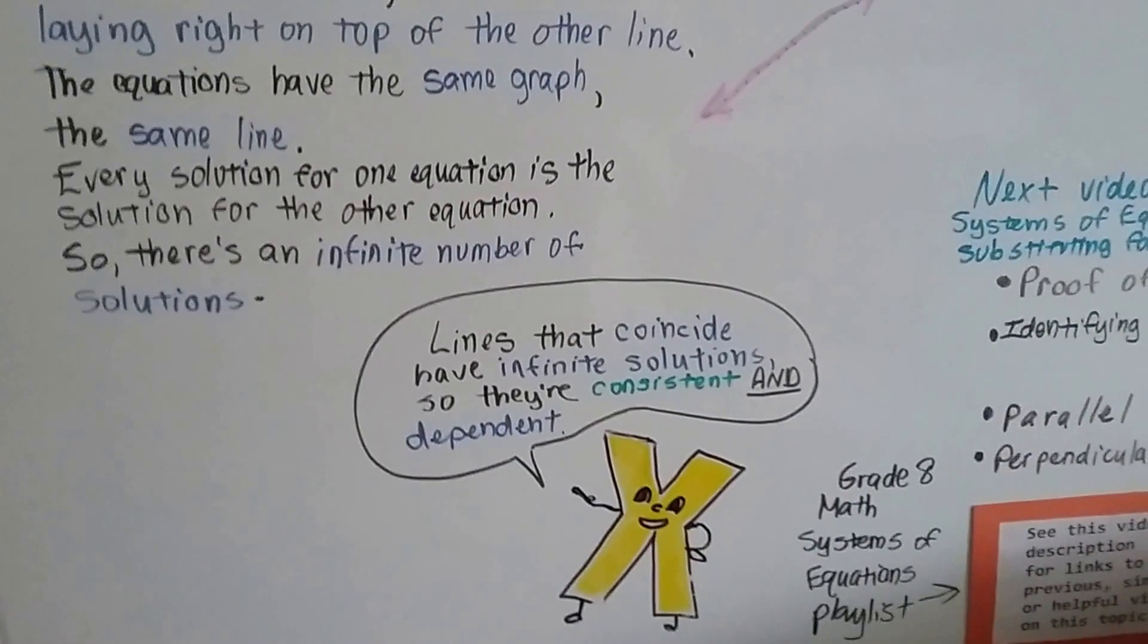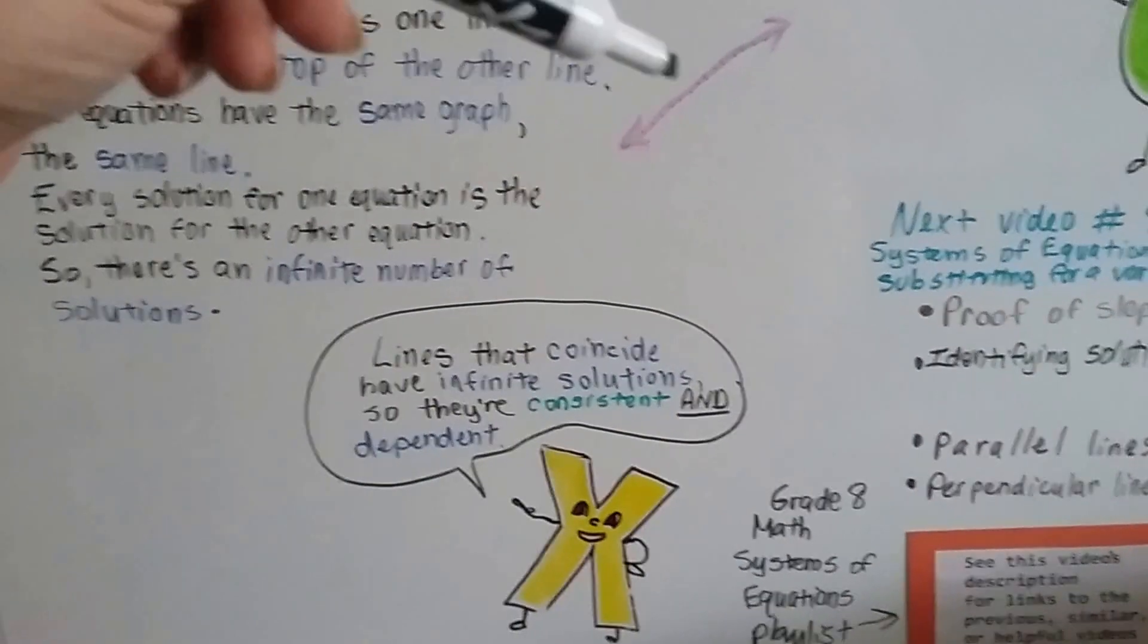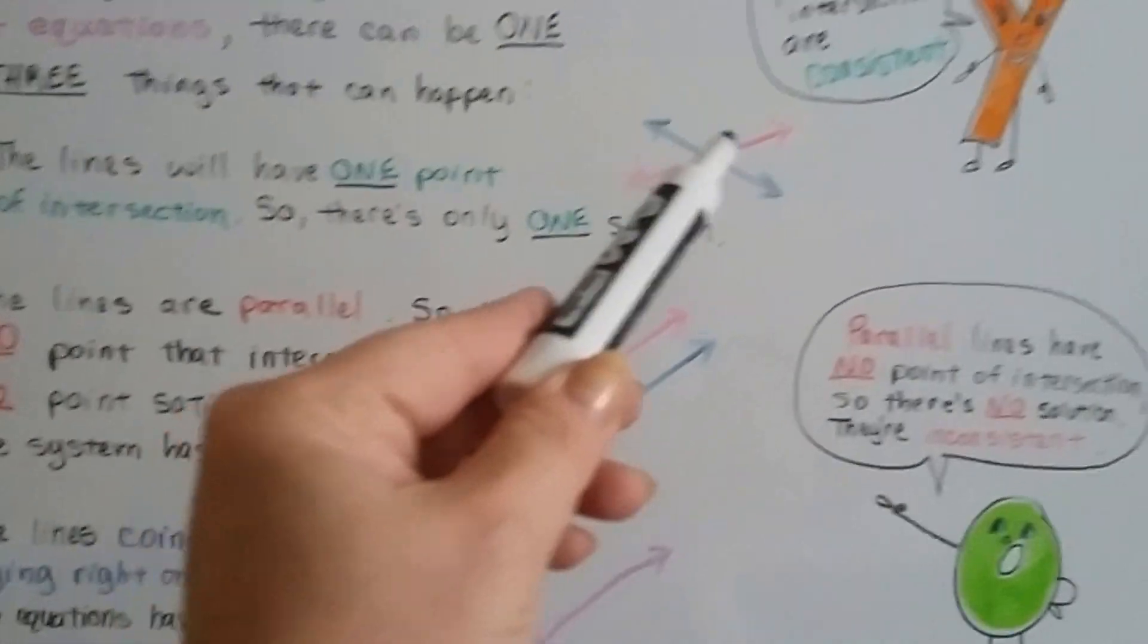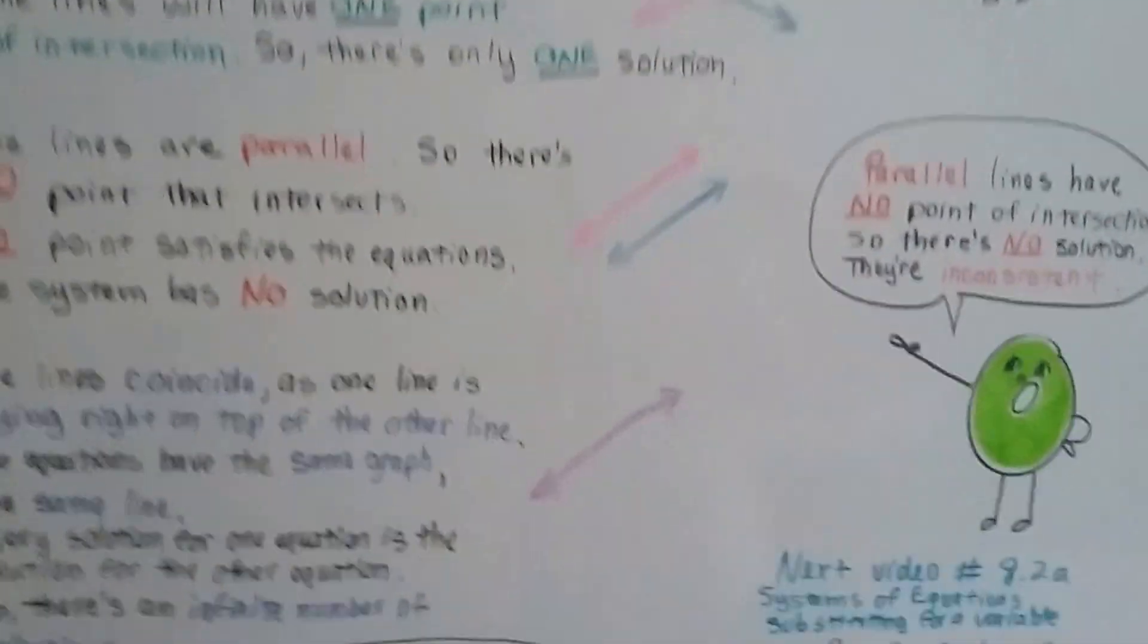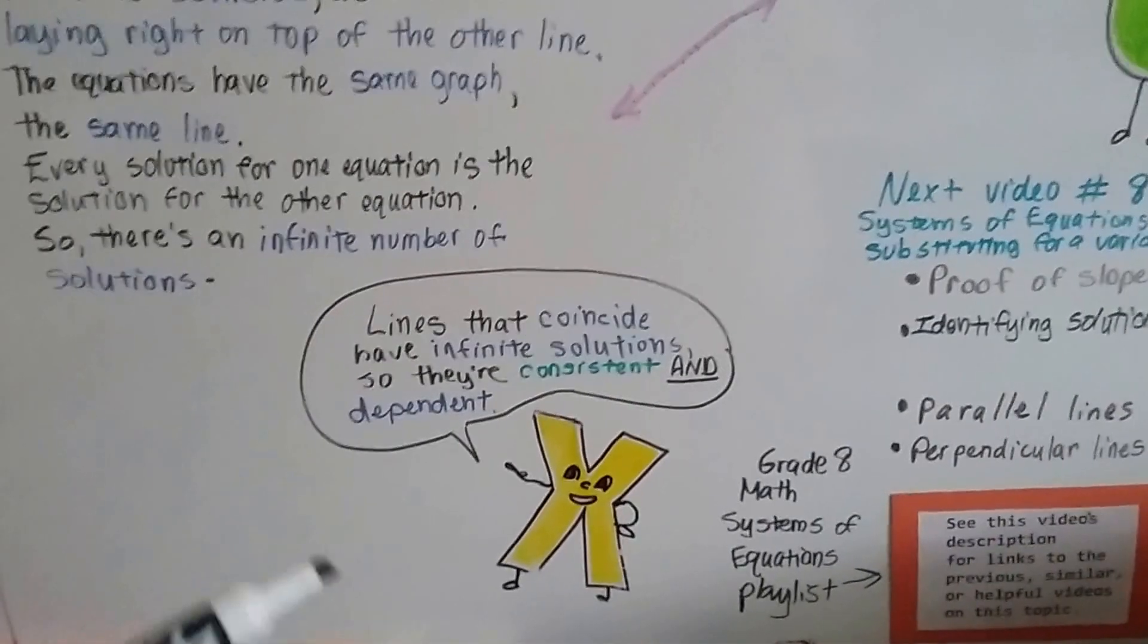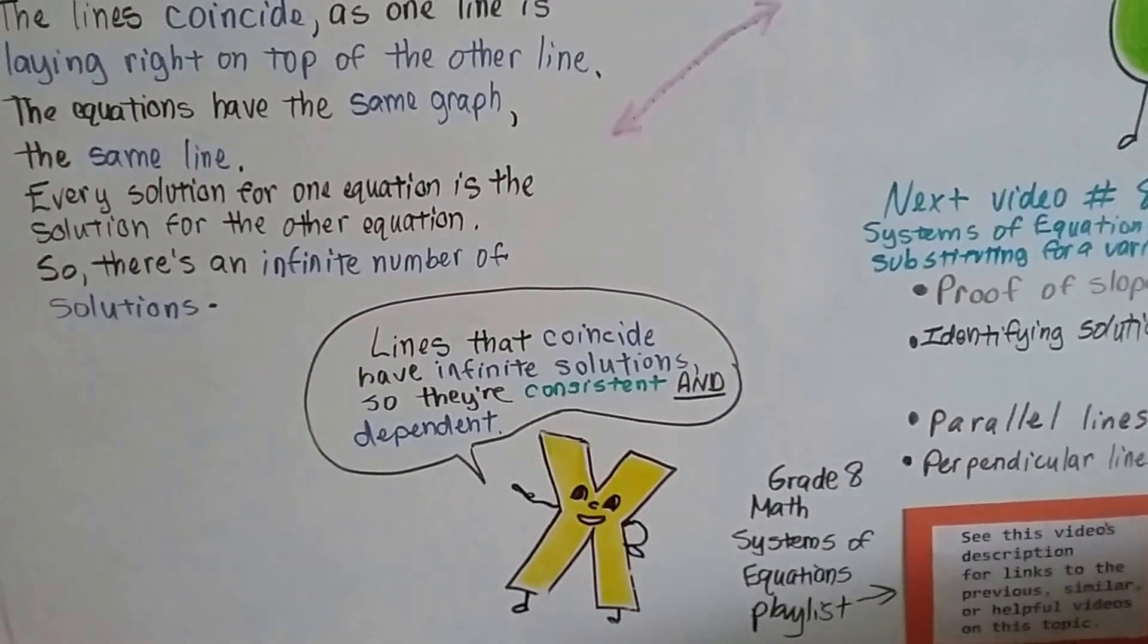So they're consistent, like this one, because they did meet at a point. And they met at more than one. So they're consistent and dependent. Because they're dependent on each other.